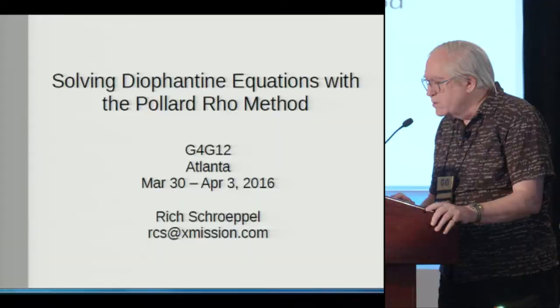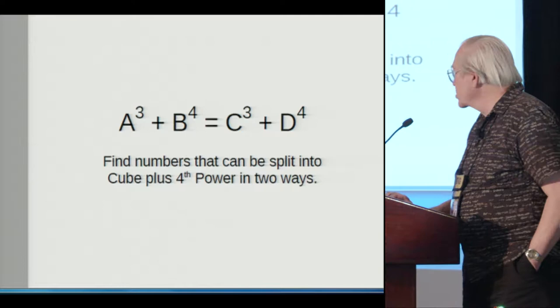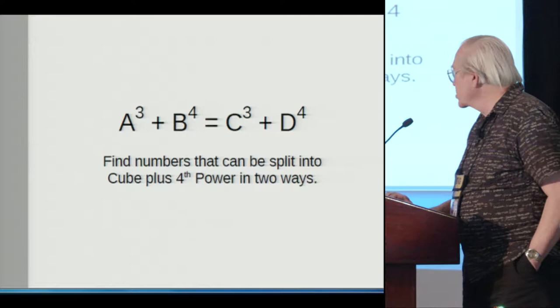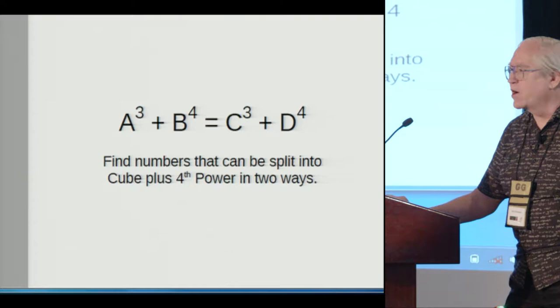Okay, here's the Diophantine equation. I'm going to try to solve this in whole numbers. What I'm looking for is a number that can be split into the sum of a cube and a fourth power in two different ways. And I've written this as this Diophantine equation, a cube plus b to the fourth and so on.